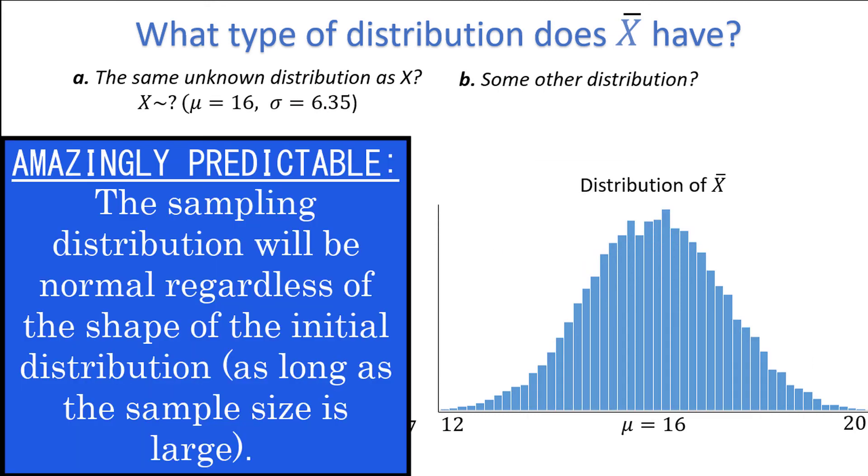The amazingly predictable part is that we can predict that the sampling distribution X-bar will be bell-shaped and symmetrical like a normal distribution, regardless of the distribution of X, as long as the sample size is large enough.